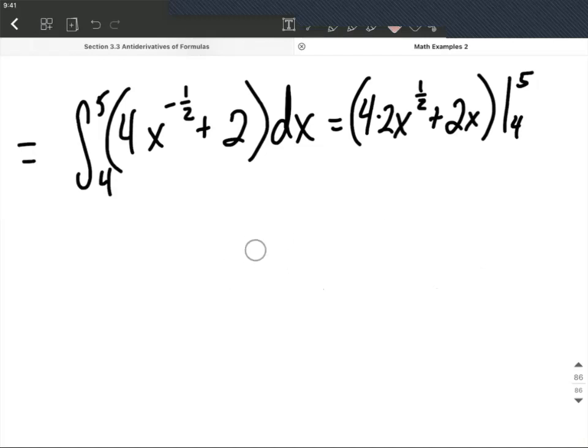Now let's actually go ahead and do the evaluating. I'm going to think of that 4 times 2 as being 8 out in front. This is going to give us 8, and I'm going to evaluate at our upper bound of integration.